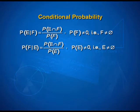At the same time, the probability of F given that E has occurred is the same as the probability of E intersection F divided by the probability of E. So when we look at the probability of E intersection F, it is nothing but the probability of E and F.